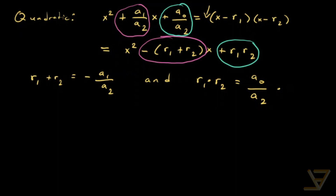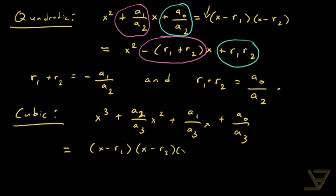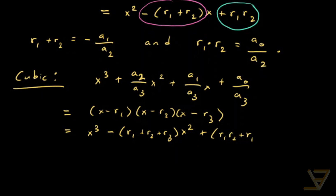Let's repeat the exercise for a cubic before moving on to the general case. We have x^3 + (a_2/a_3)x^2 + (a_1/a_3)x + (a_0/a_3), and we factor that as (x - r_1)(x - r_2)(x - r_3). Expanding it, we get x^3 - (r_1 + r_2 + r_3)x^2 + (r_1 r_2 + r_1 r_3 + r_2 r_3)x - r_1 r_2 r_3.